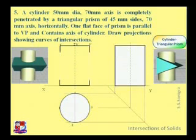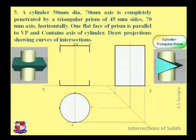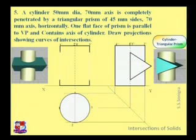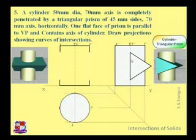Draw all three views of the cylinder with named endpoints and axis. Now for the triangular prism: one flat face of the prism is parallel to the vertical plane and contains the axis of the cylinder. So in the side view it will appear as a triangle with the base on the axis. Draw the triangle of the given dimension such that the base is on the axis.